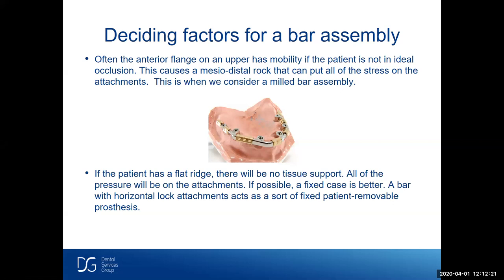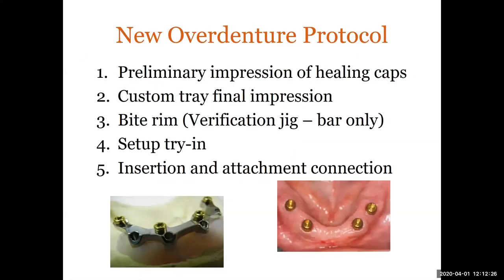If the patient has a flat ridge, there will be no tissue support and pressure will be on the attachments — so if possible, a fixed case would be better. A bar with horizontal lock attachments acts as a sort of fixed patient-removable prosthesis. The protocol for overdentures: first get a preliminary impression of the healing caps, then make a custom tray and get the final impression, pour the model, make a bite rim and occlusal rim. If we're making a bar, we send a verification jig along with the bite rim.